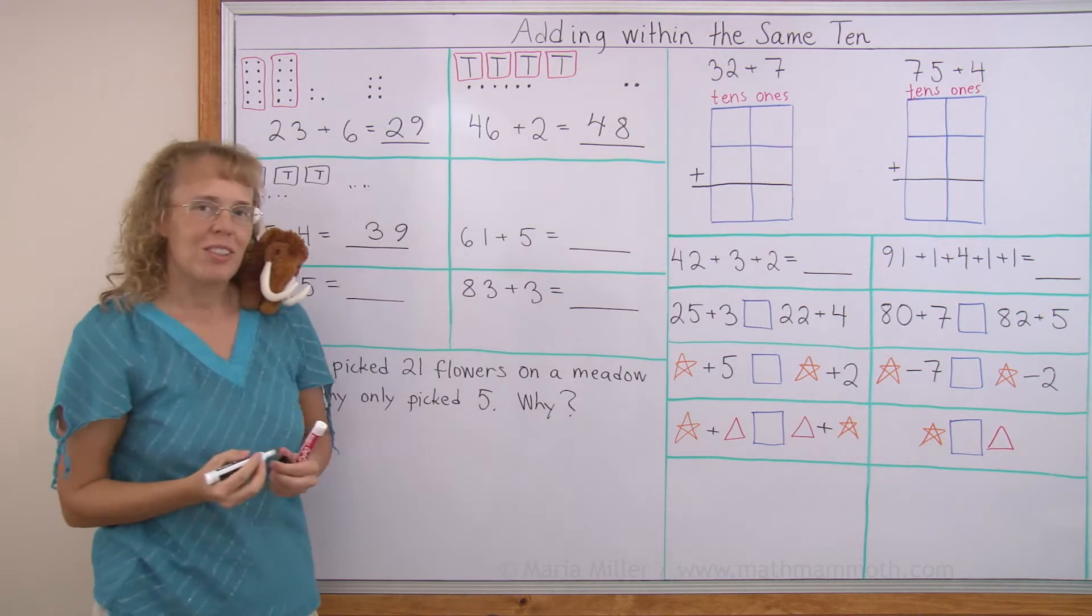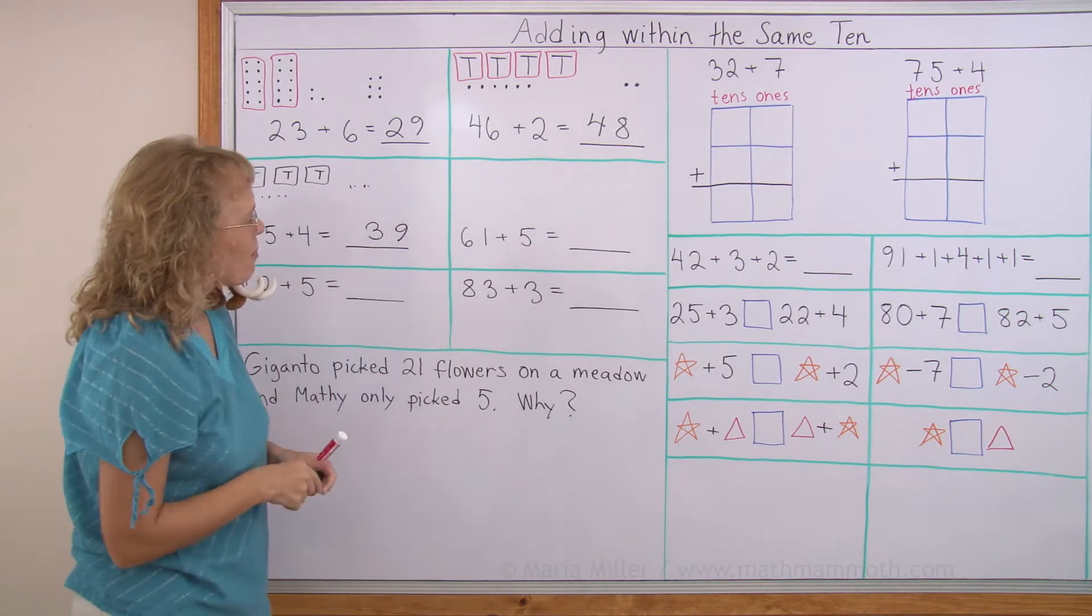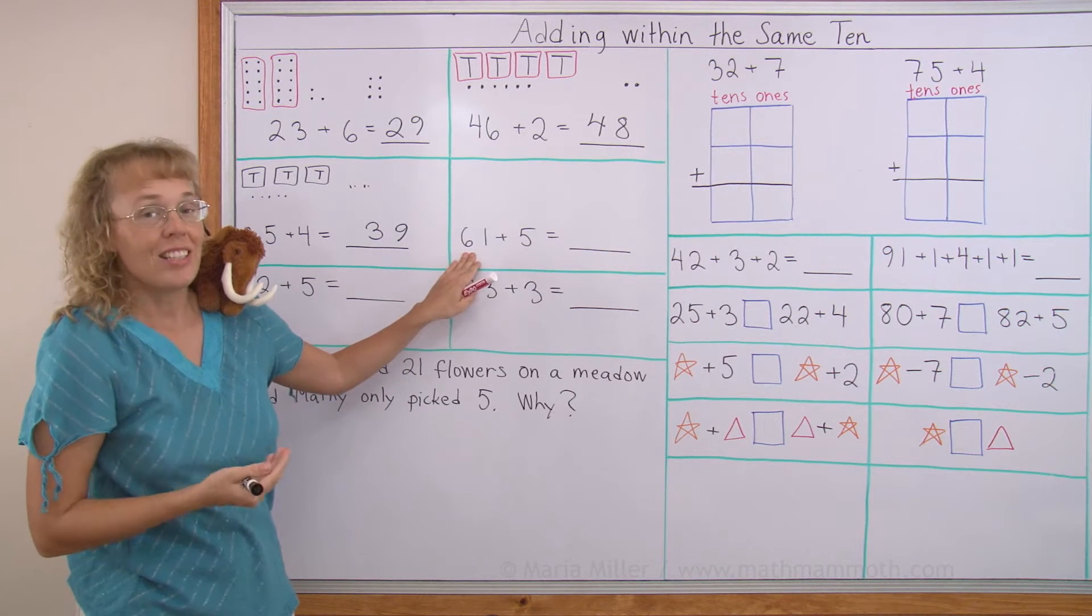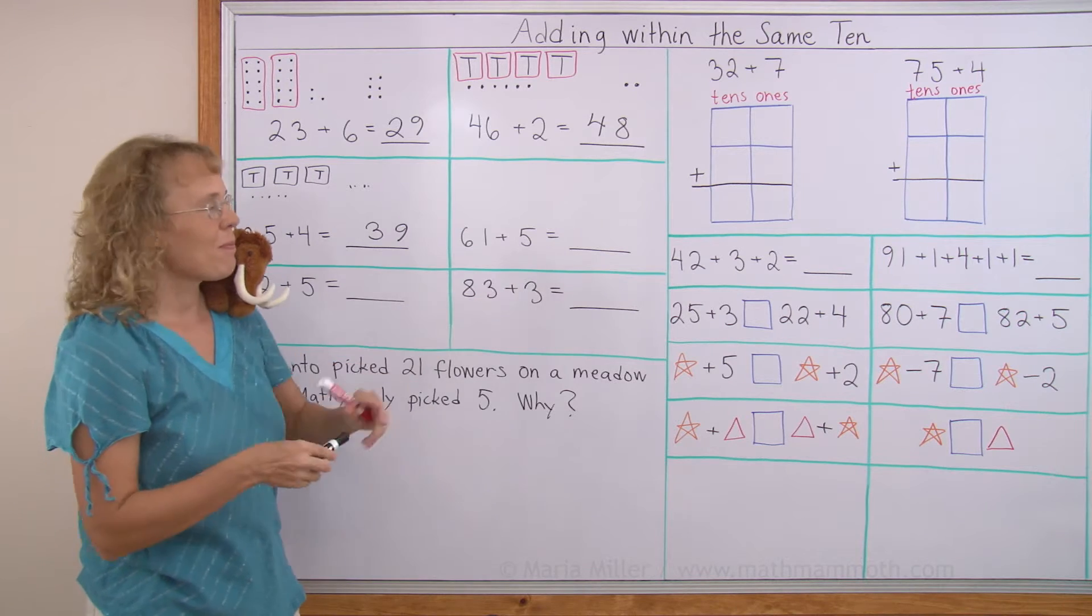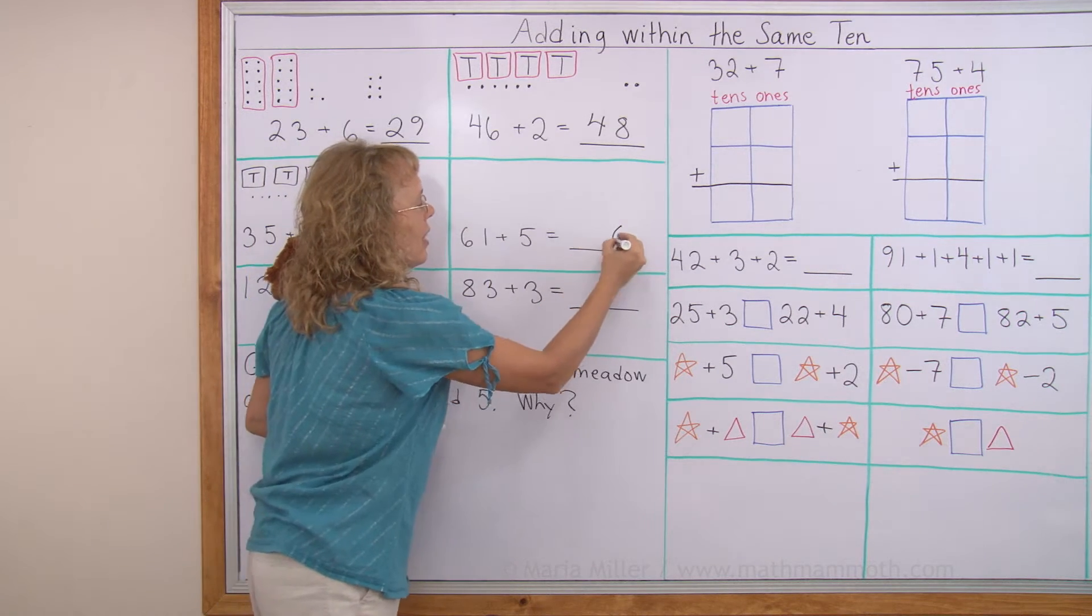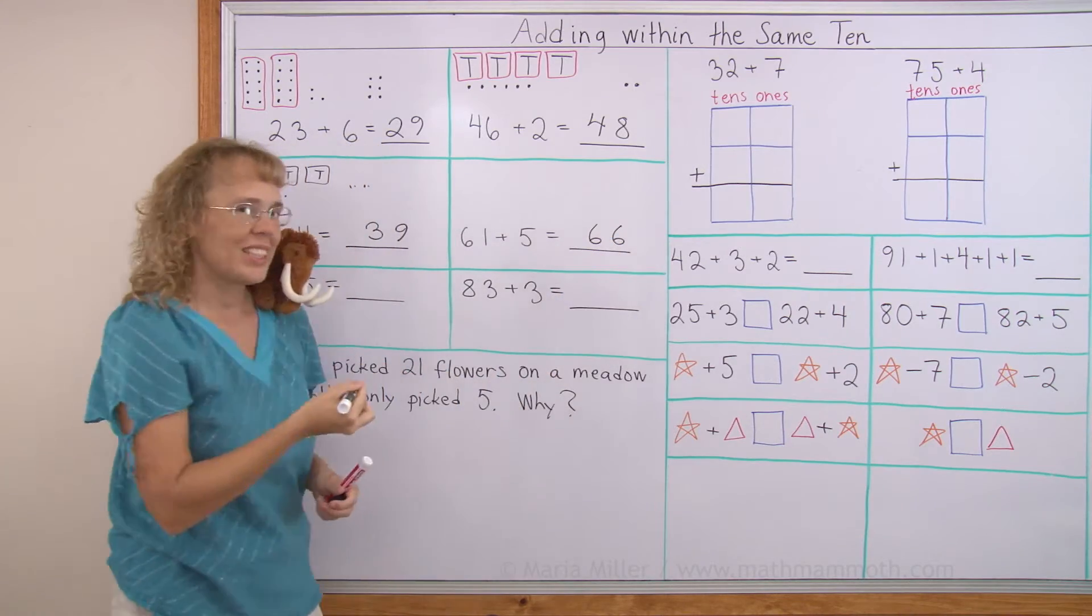Now let's try this one without using a visual model. 61 plus 5. Here I add the little dots. The 1 and 5. And I get 6. And so these 6 10s don't change. I have them there. 66.